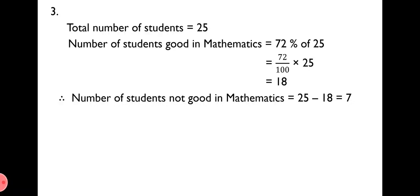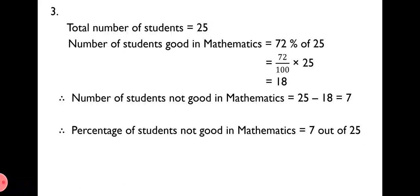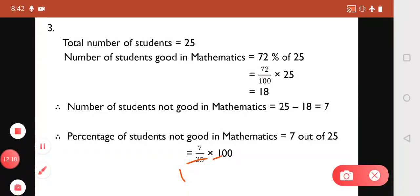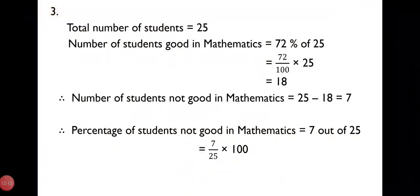Now, 7 is what percentage of 25? Percentage of students not good in mathematics = 7/25 × 100 = 28%. Which confirms that directly 100 − 72 = 28%. So 28% of students are not good in mathematics.